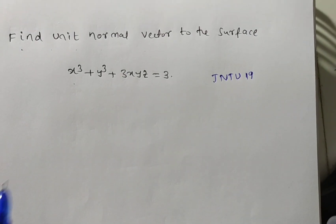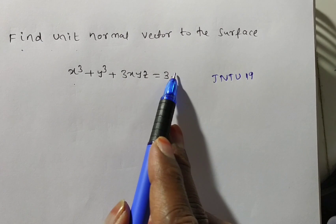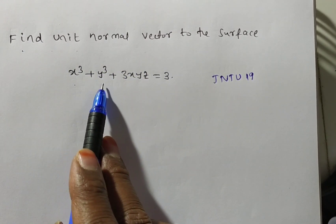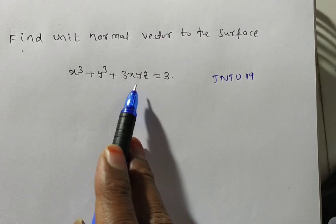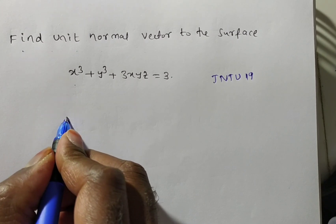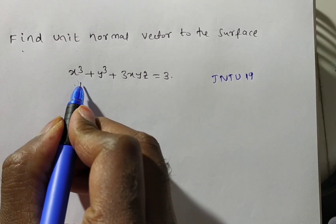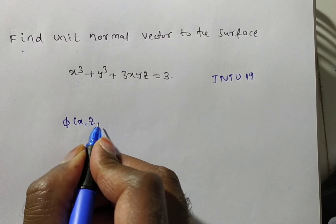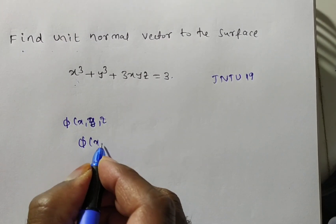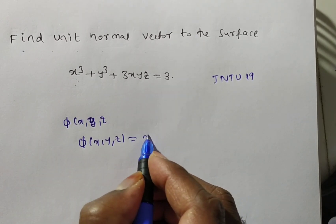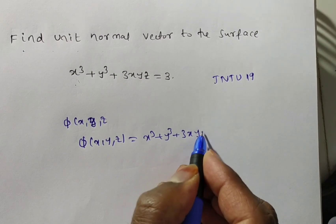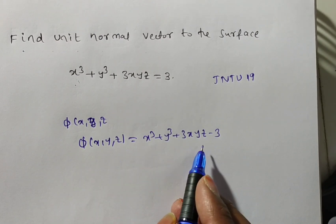We know that this is a scalar — not a vector — because it does not contain i, j, k terms. So we can say this is a scalar point function. For this scalar point function, we denote it with the given function. How many variables are there? x, y, z. So let φ(x, y, z) = x³ + y³ + 3xyz − 3. It is a scalar point function.